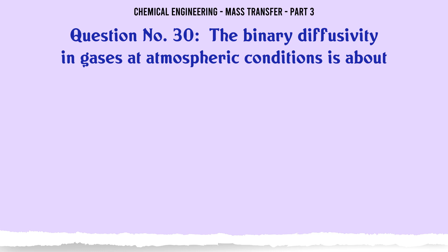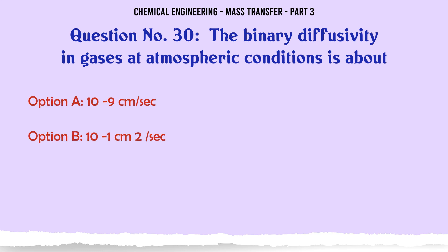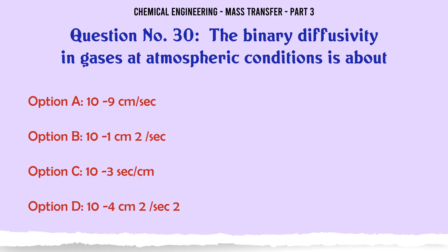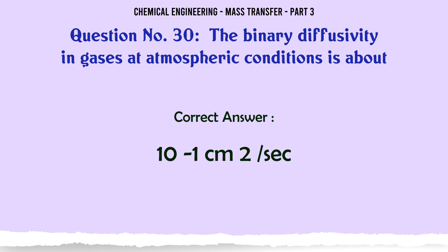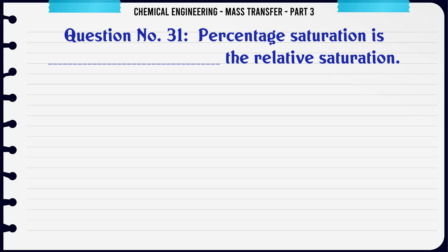The binary diffusivity in gases at atmospheric conditions is about: A) 10^-9 cm/s, B) 10^-1 cm²/s, C) 10^-3 s/cm, D) 10^-4 cm²/s². The correct answer is: 10^-1 cm²/s. Percentage saturation is always smaller than relative saturation.